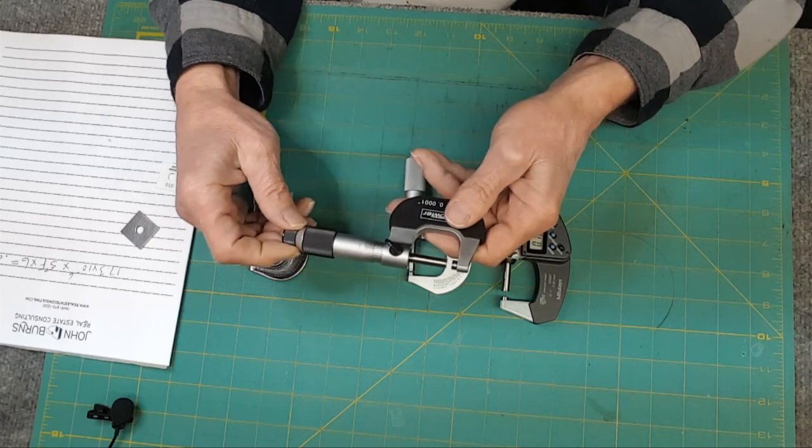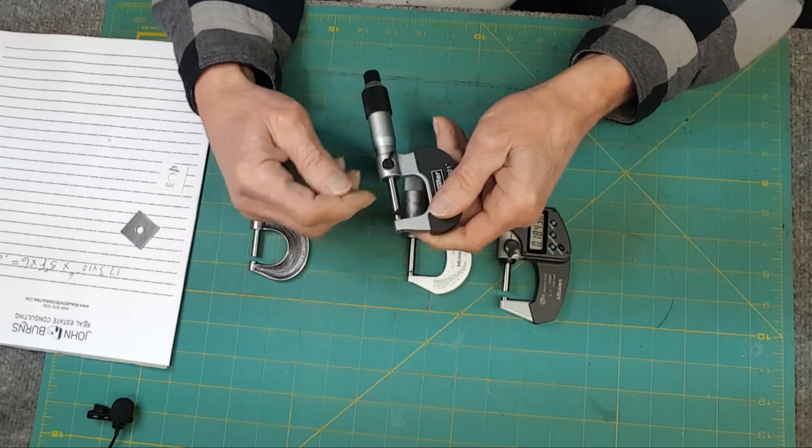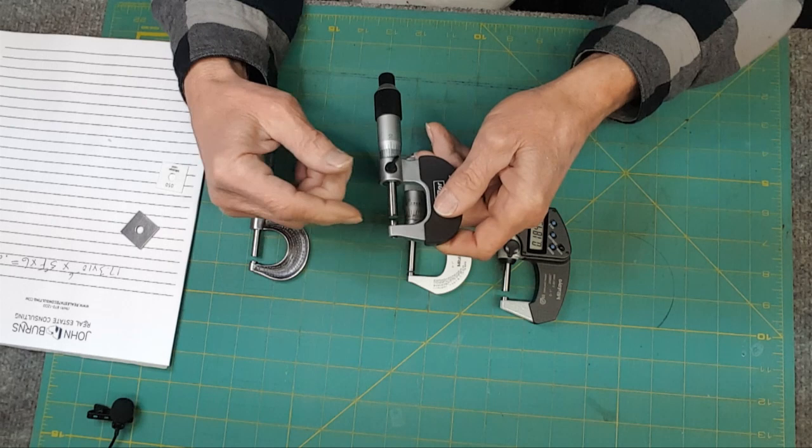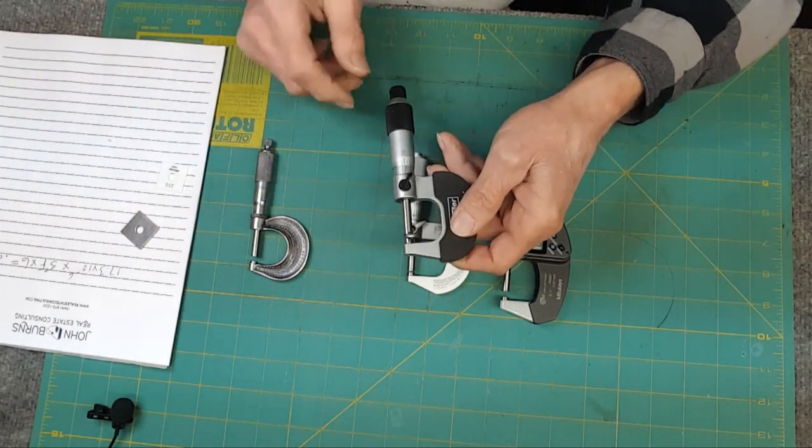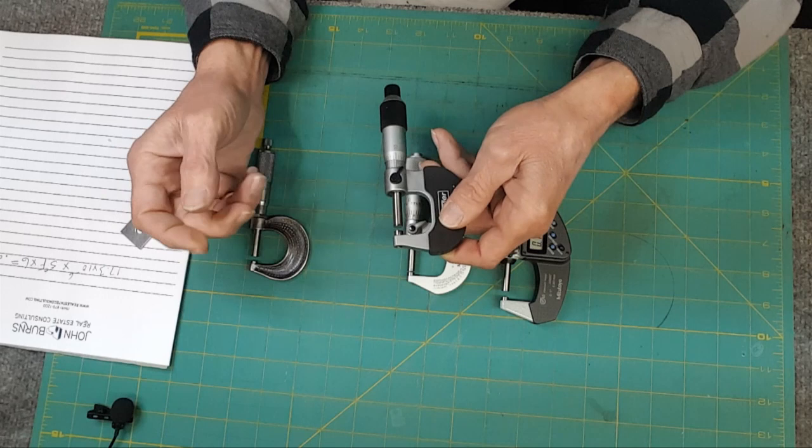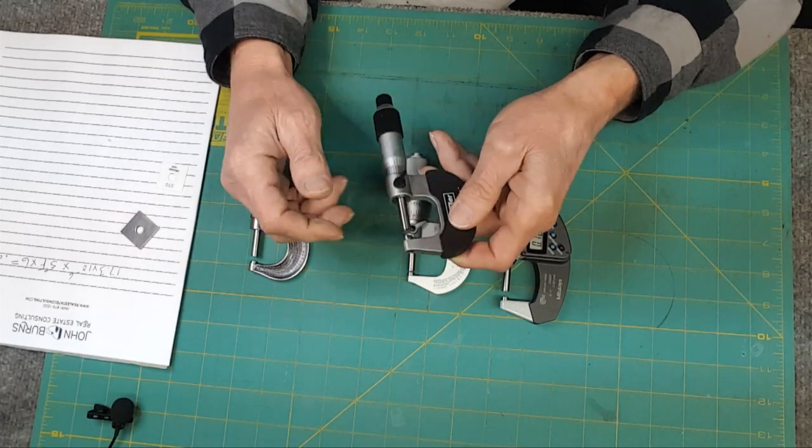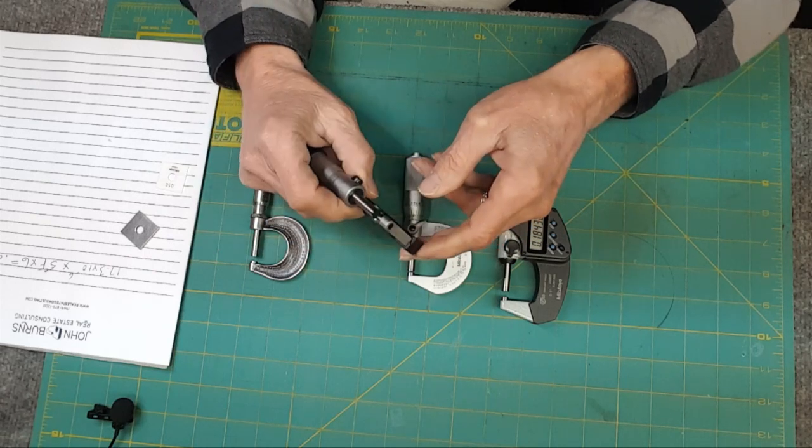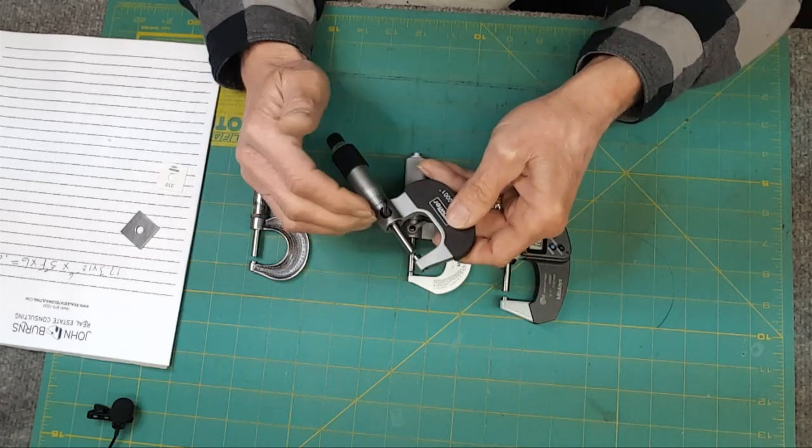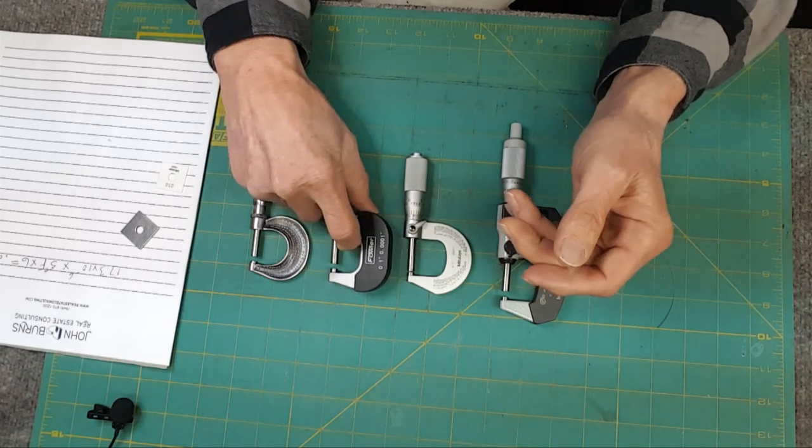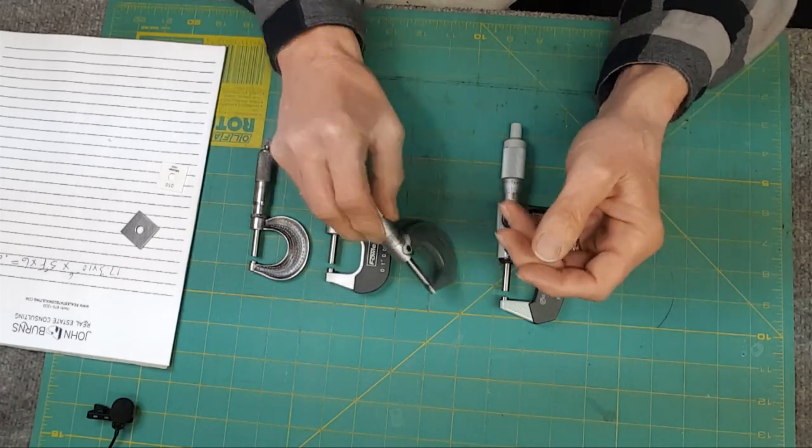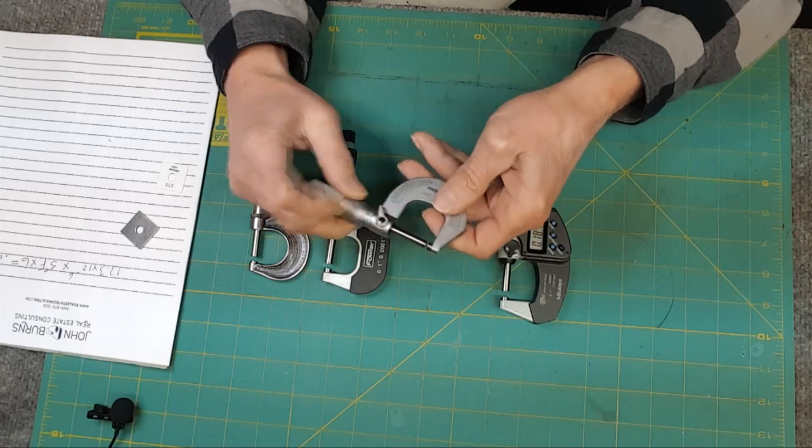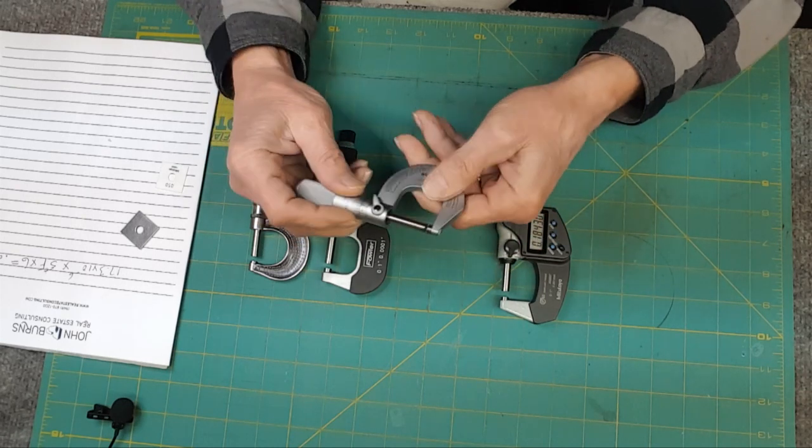You can buy micrometers in zero to one inch, one to two inch, two to three, and so on. The thing you want to look for though is that they do have a ratchet so that you're consistent with how much force you're putting on whatever you're measuring. This guy's good, it has what's called a vernier, and you can research how to read that, but this is good, capable of measuring down to a tenth of a thou, and it's spot on.